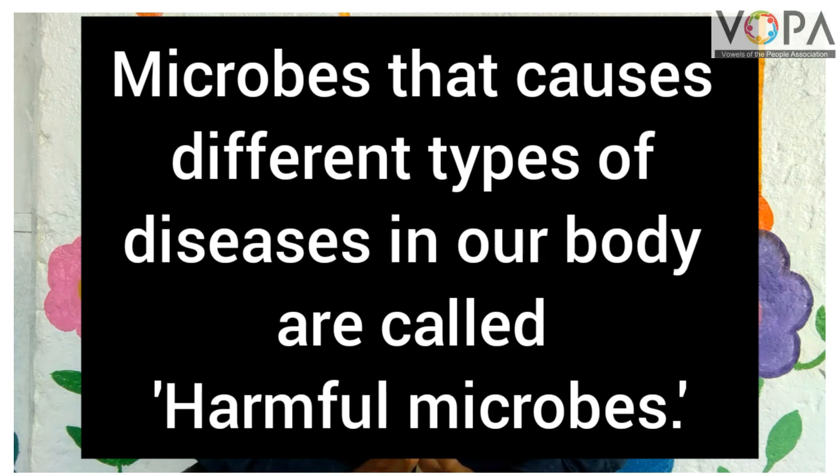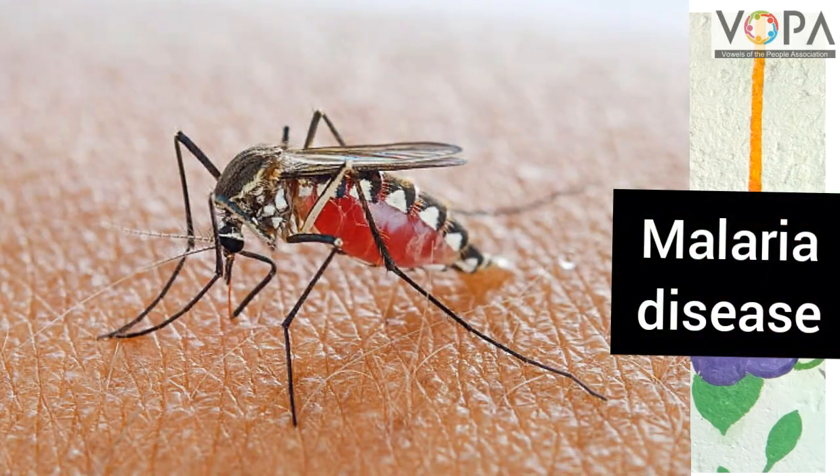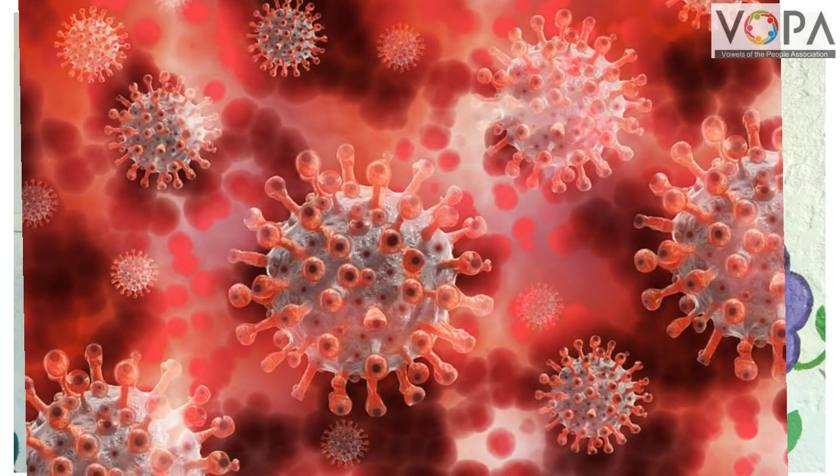For example, Anopheles is the name of the mosquito which causes disease in our body. Today we are facing the problem of COVID-19 virus. This virus is also one type of harmful microbe because it causes the disease called corona in our body. Now we will see about the pathogens.